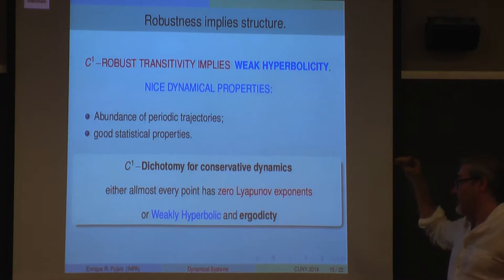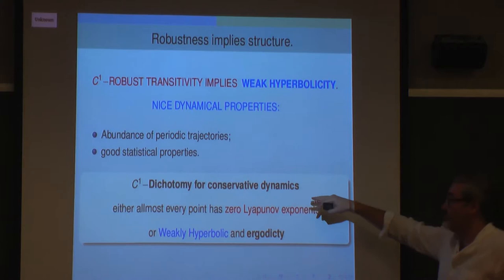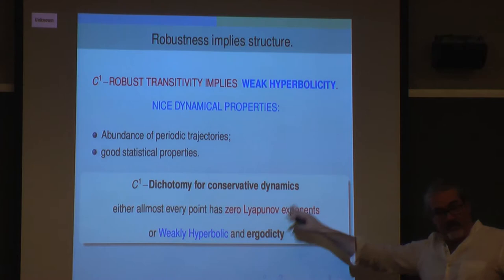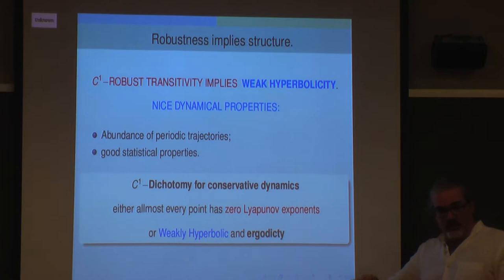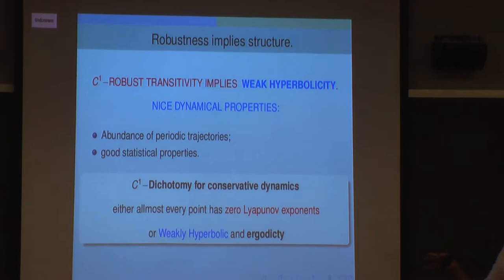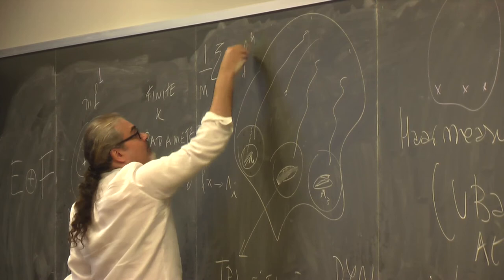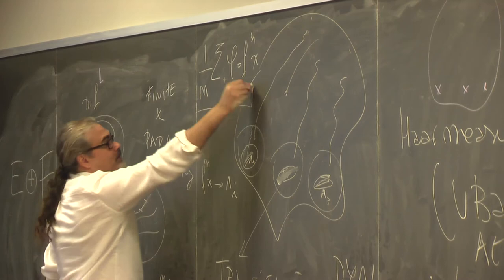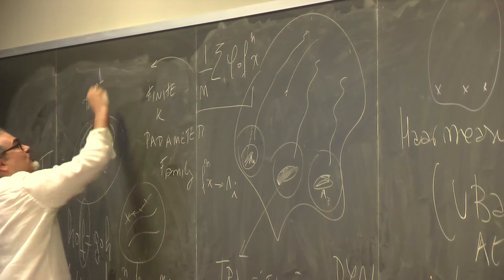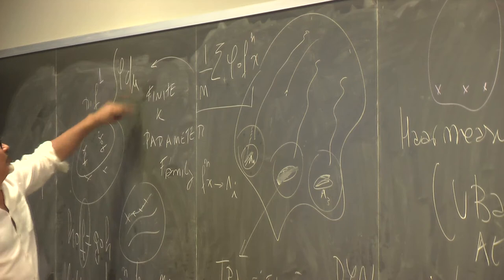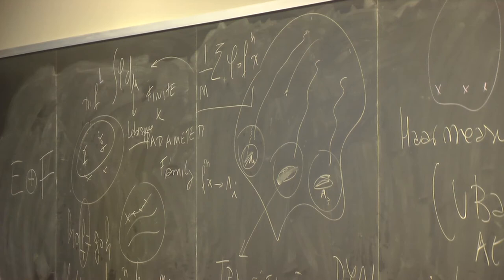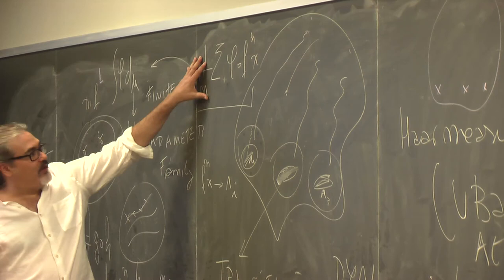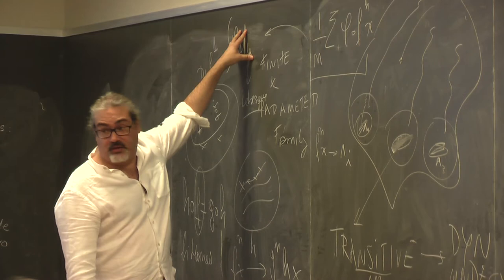C1 robust transitivity implies weak hyperbolicity. People believe the same holds for C2, C3, C4, etc. But if you put boundary on the manifold it's false: C2 robust transitivity does not imply hyperbolicity nor weak hyperbolicity. This is a curiosity but a good indication of what could fail when you move up in topologies. The dichotomy says: you have ergodicity, or almost every point has zero Lyapunov exponent. Zero Lyapunov exponent means the asymptotic rate of divergence of trajectories is zero—not separated at a constant rate. The entropy of the system is zero.